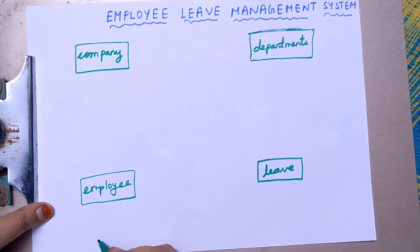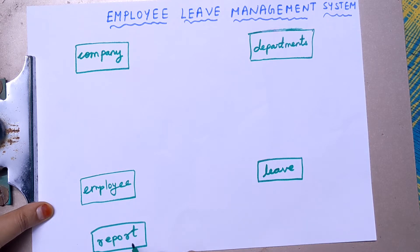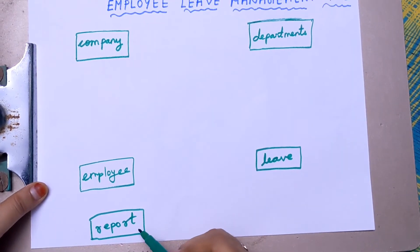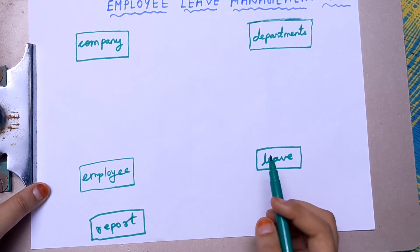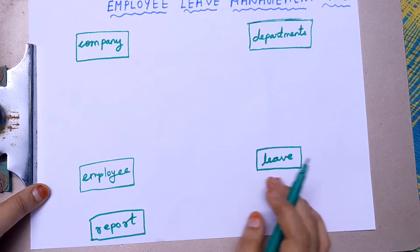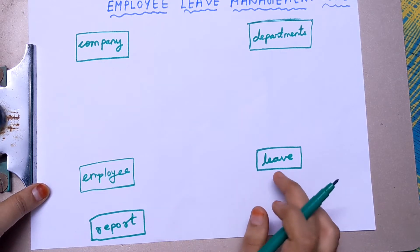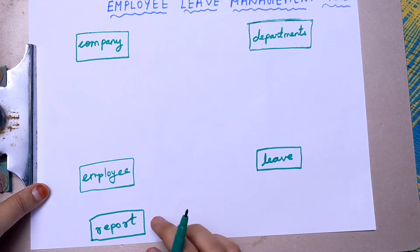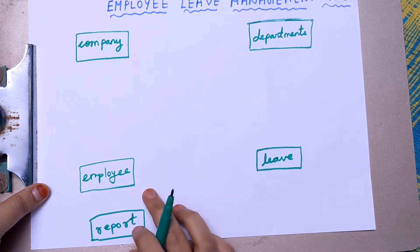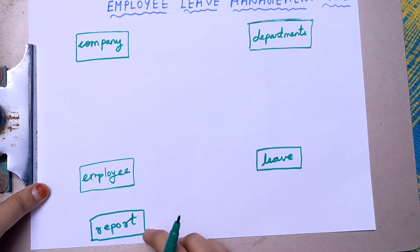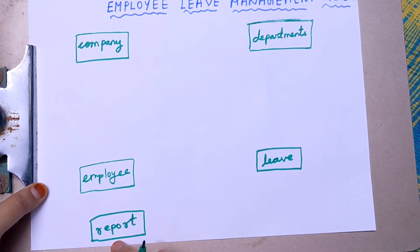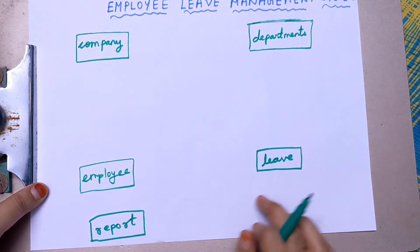The next entity is report. Report is conceptually existing — if an employee wants to take a leave, they cannot directly take it. First, the employee must report to the manager or higher official, and only after reviewing the leave status will leave be provided. So report is an important entity. In total, we have five entities: company, department, employee, leave, and report.